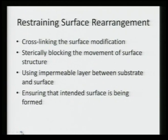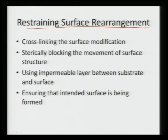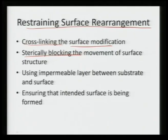At the same time, once we introduce a surface layer, we want to retain that particular surface arrangement. If the surface starts getting rearranged, it might break, lose the structure, or lose functionality. To retain the surface rearrangement as planned, we can reduce movement by cross-linking the modified surface, or sterically block the movement of the surface. If we construct the chain in such a manner that overall movements are not possible sterically, the chain organization itself does not allow further movement. We can also introduce an impermeable layer between the substrate and the surface to minimize movement.